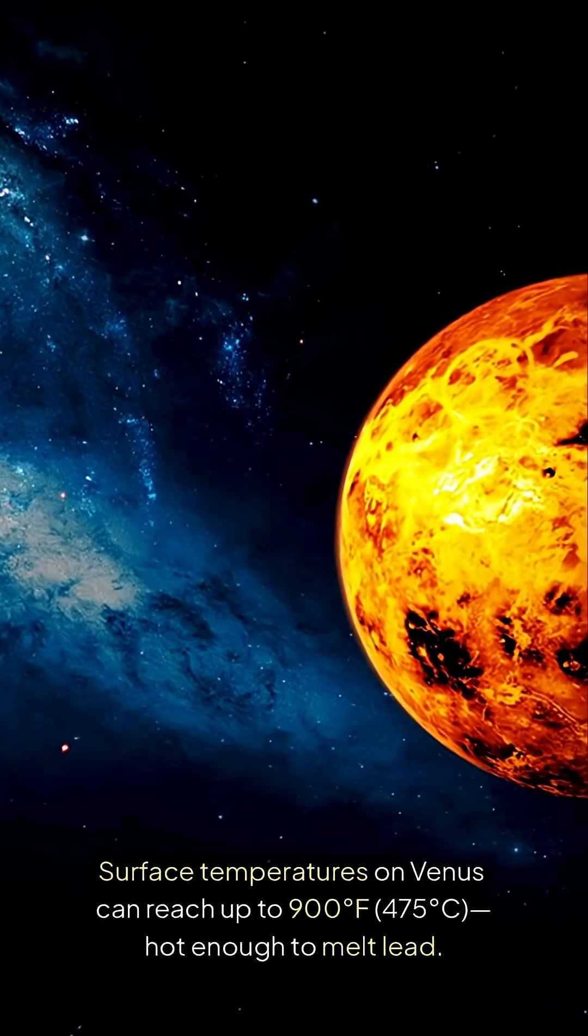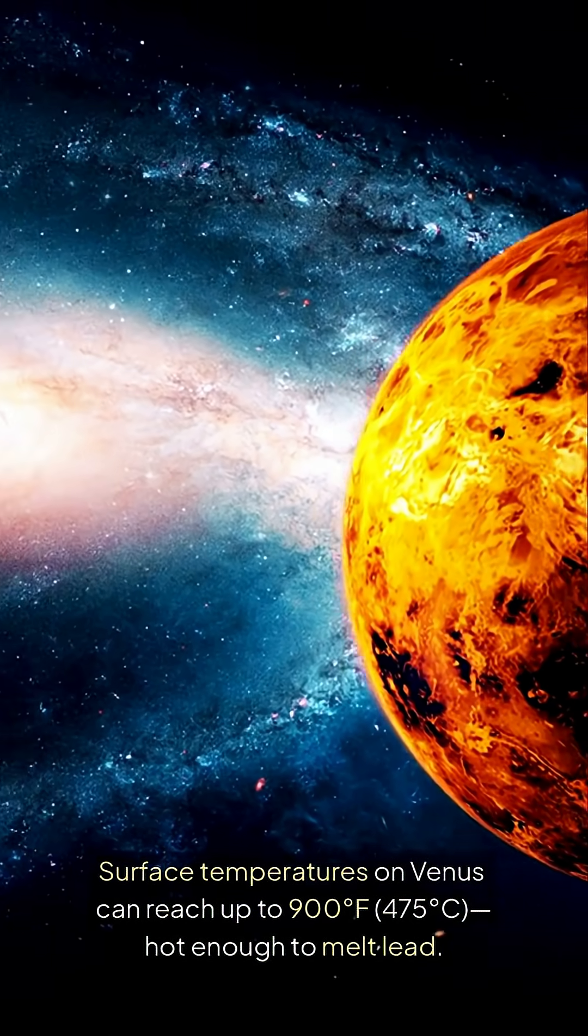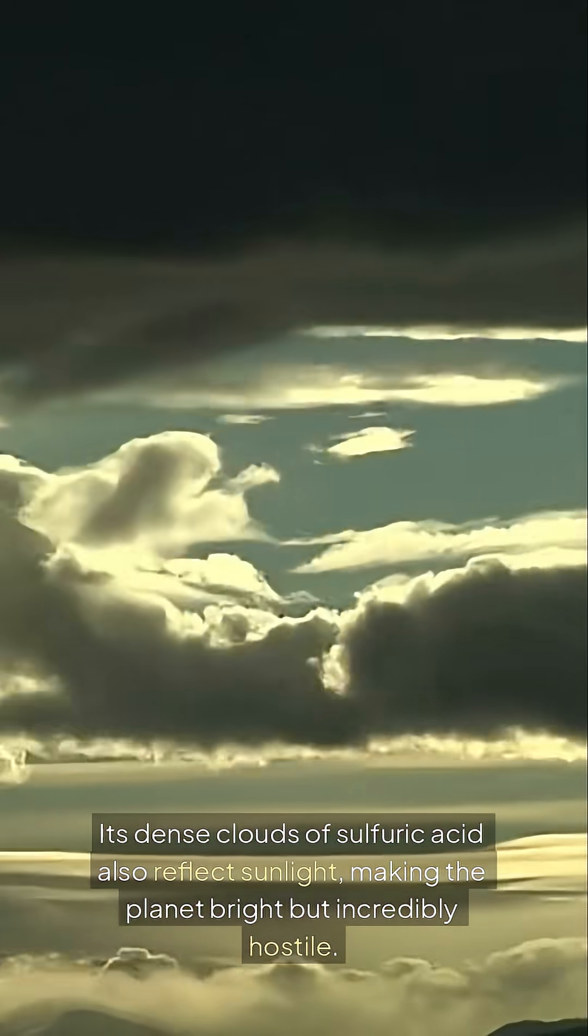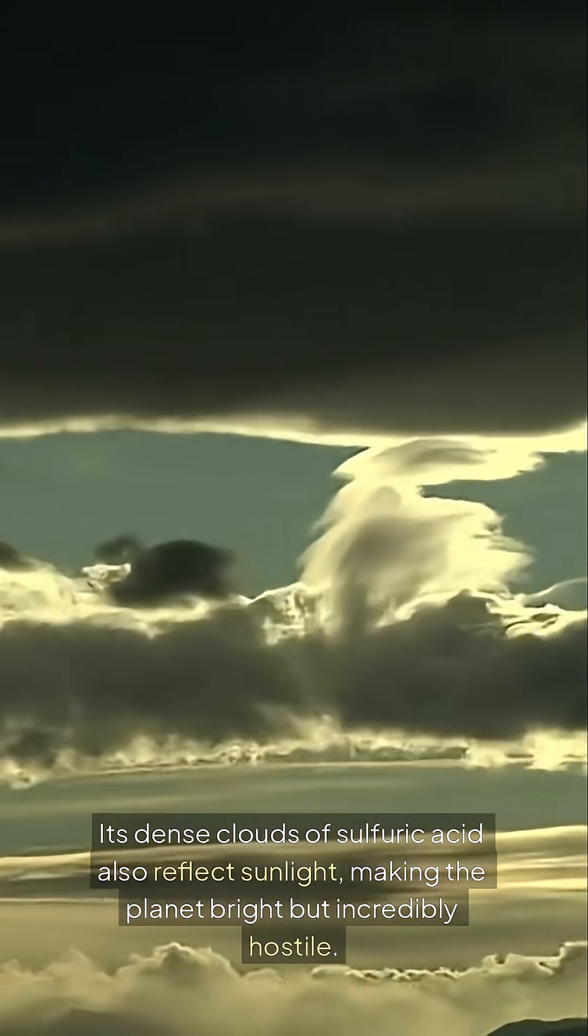Surface temperatures on Venus can reach up to 900 degrees Fahrenheit, 475 degrees Celsius, hot enough to melt lead. Its dense clouds of sulfuric acid also reflect sunlight, making the planet bright but incredibly hostile.